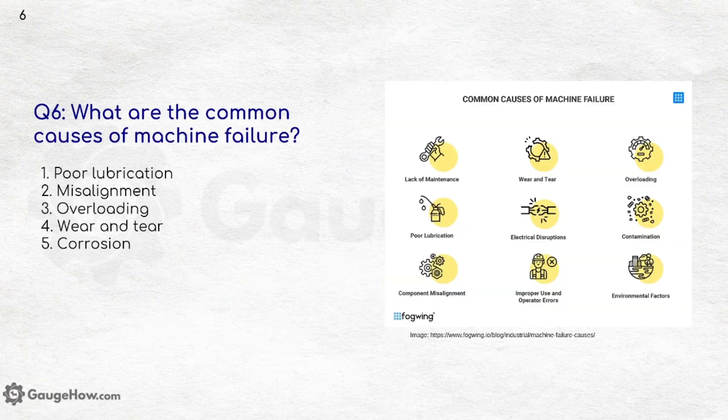What are the common causes of machine failure? Poor lubrication, misalignment, overloading, wear and tear, and corrosion. Remember, whenever you are answering questions about failure causes, these points will always help you because some or the other machine is related to each of these failures.